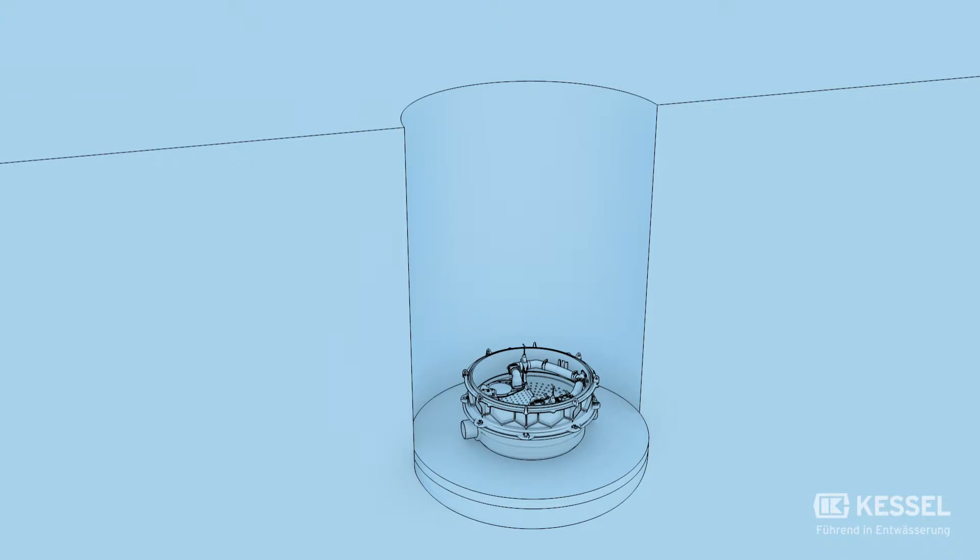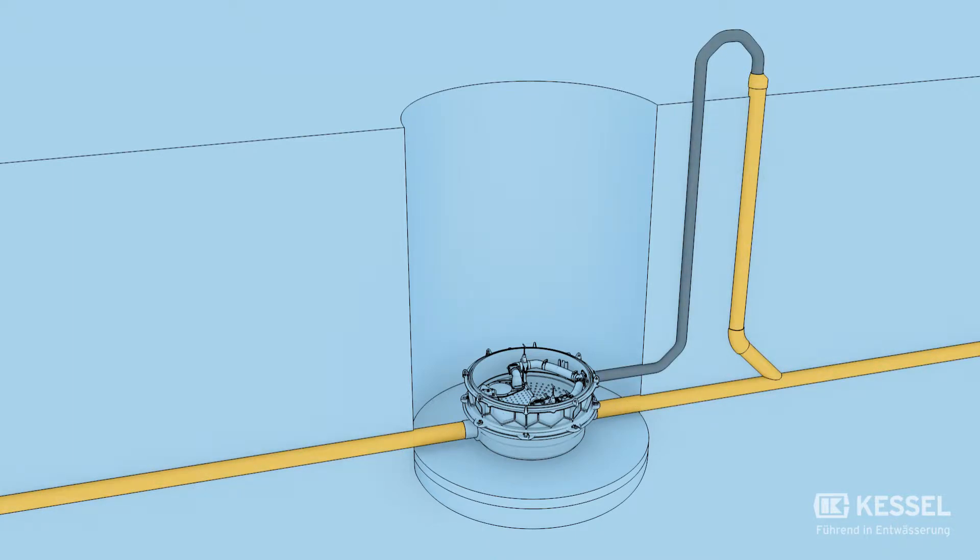Next, we connect the two inlet and outlet pipes, DN150, making sure there is a continuous incline.